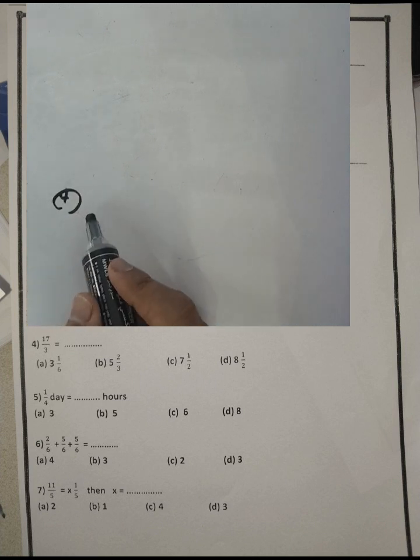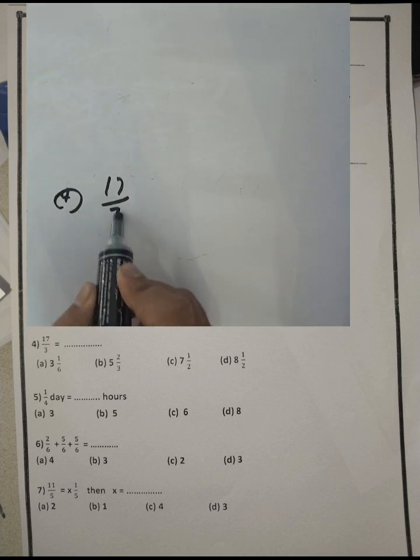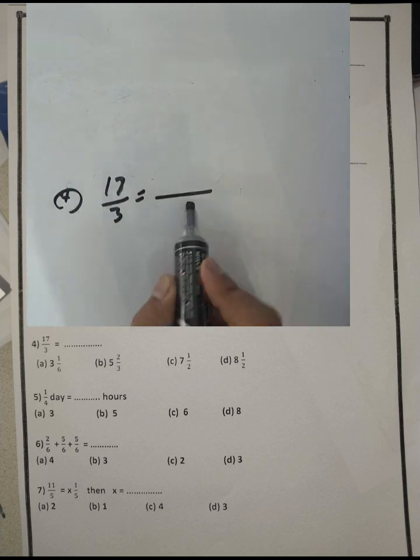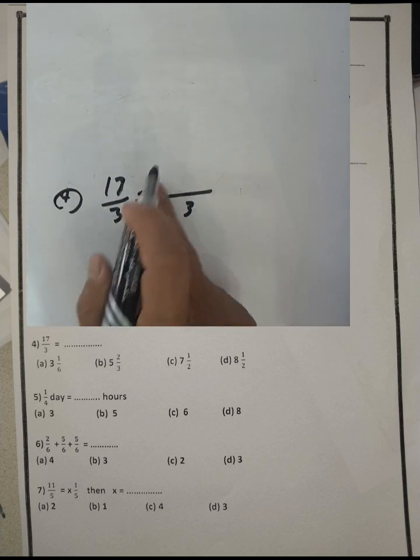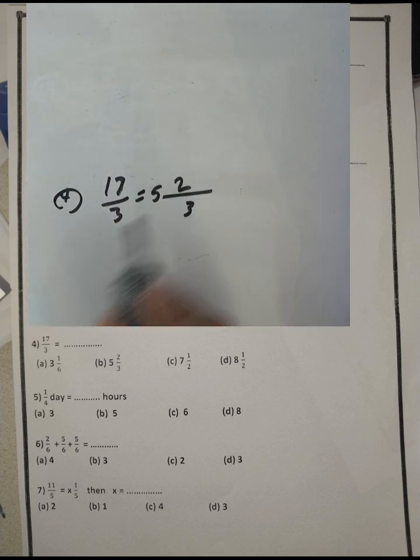Question number four: we have seventeen over three. We convert from improper fraction to mixed number. Three times five equals fifteen with remainder two, so the result is five and two over three.